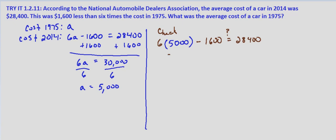So $30,000 - six times 5,000 is $30,000 minus $1,600. Does that equal $28,400? And it does equal $28,400. So we end up with a true statement verifying that the cost in 1975 was $5,000.